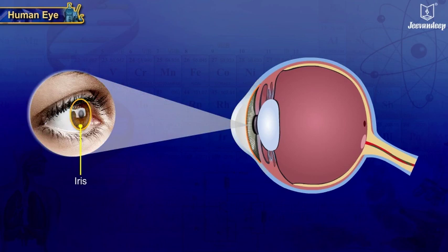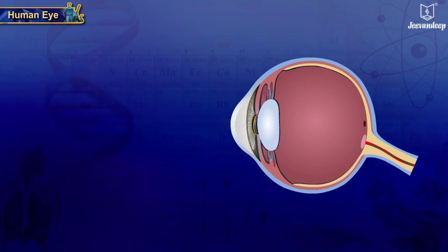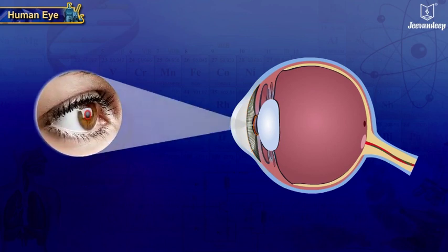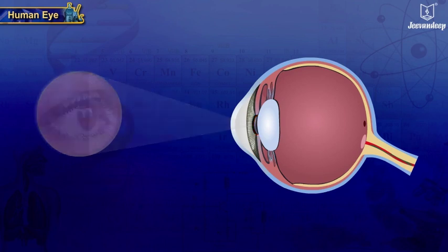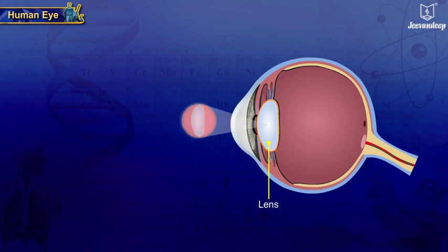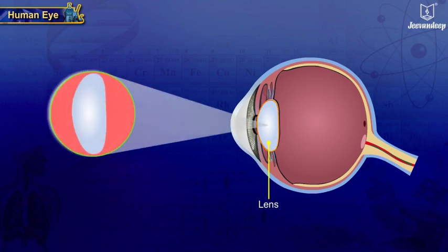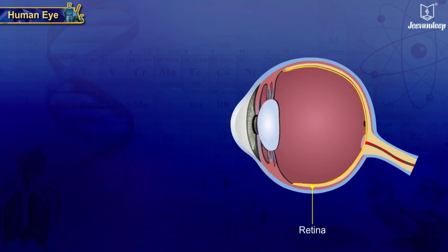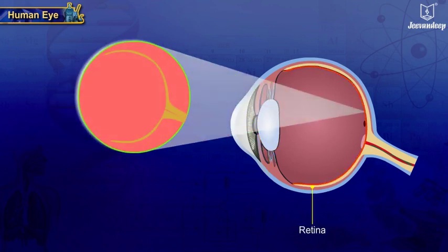The iris is a muscular diaphragm that surrounds a small opening called the pupil. Behind the pupil is the lens, which is a transparent biconvex crystalline body. The retina is the light-sensitive layer of tissue that lines the inner surface of the eye.